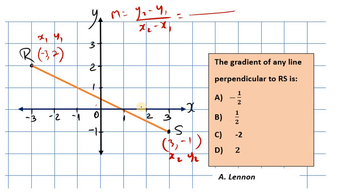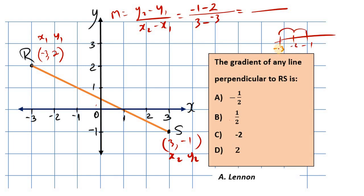y2 is negative 1, minus y1 which is positive 2. Then x2 is 3, minus x1 which is negative 3. For the numerator: negative 1 minus 2 — signs are the same, so we add the numbers and keep the sign — giving negative 3. For the denominator: 3 minus negative 3 becomes 3 plus 3, which is 6. Negative divided by positive is negative, and 3 goes into 6 twice, so that gives us negative 1 half. The gradient of RS is negative 1 half.